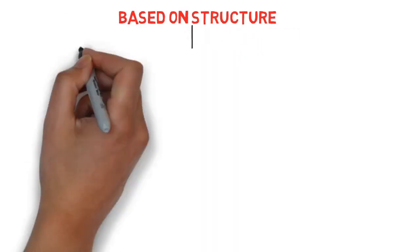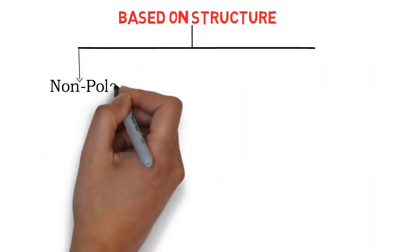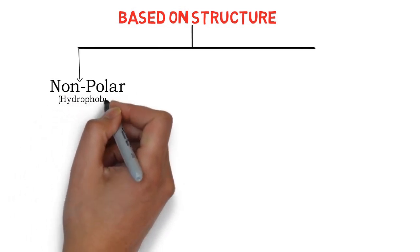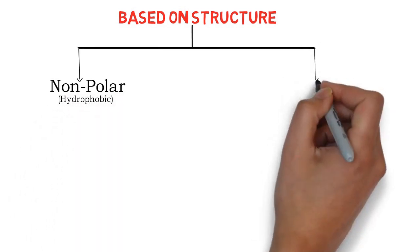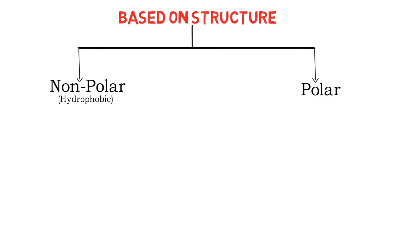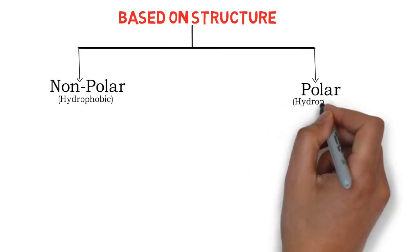First is classification based on structure. We can divide amino acids in two ways: first is non-polar, that is hydrophobic, and second one is polar amino acid, that is hydrophilic.